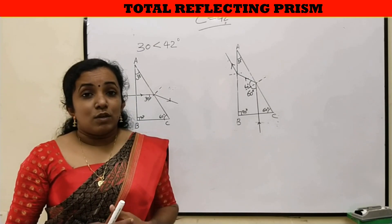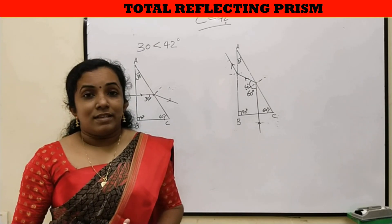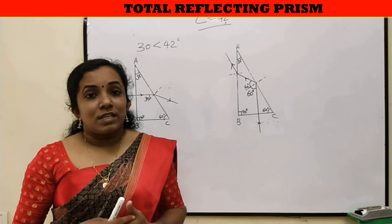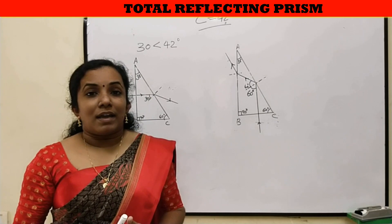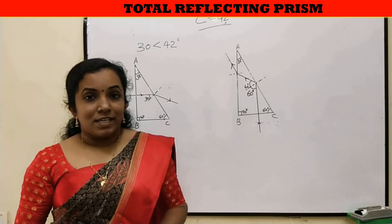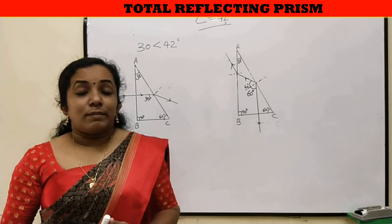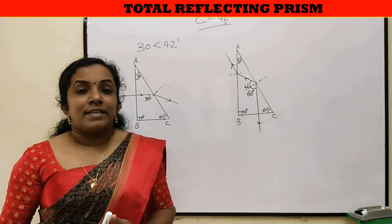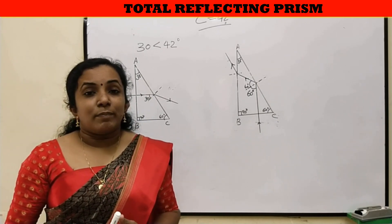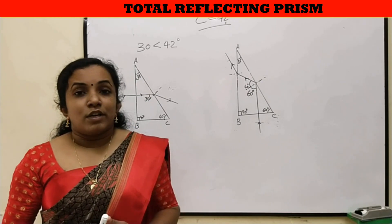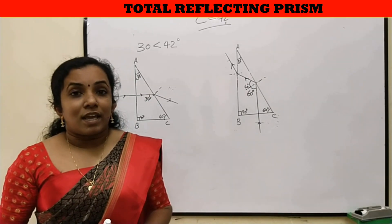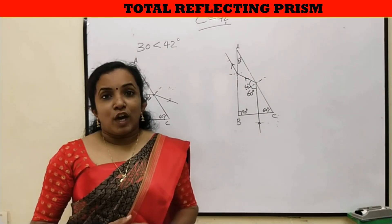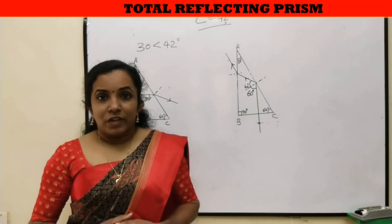The total internal reflection prism is used in periscopes to turn the ray by 90 degrees, and in slide projectors to turn the ray by 180 degrees. Hope you understood critical angle, total internal reflection, and all the related concepts.